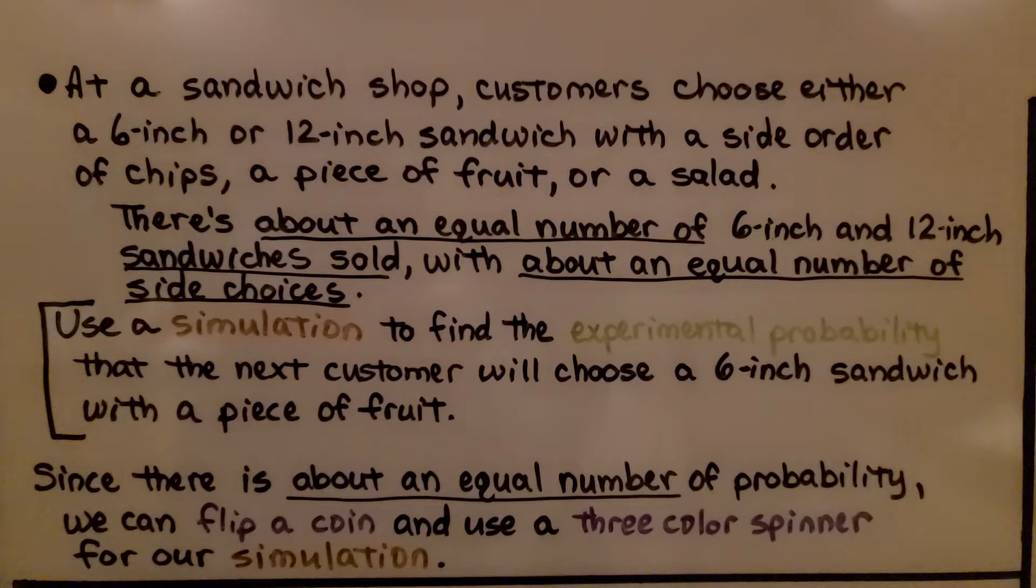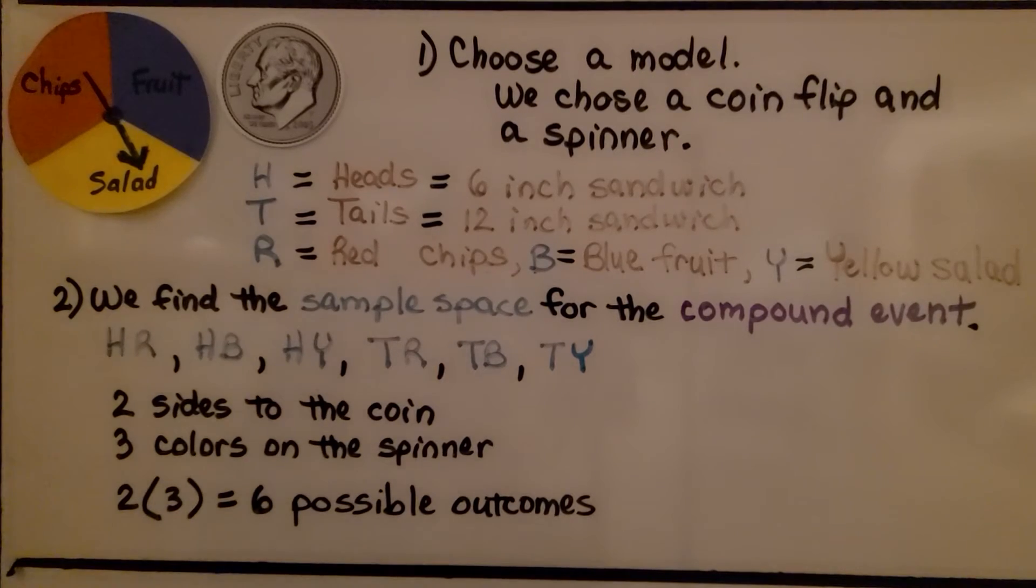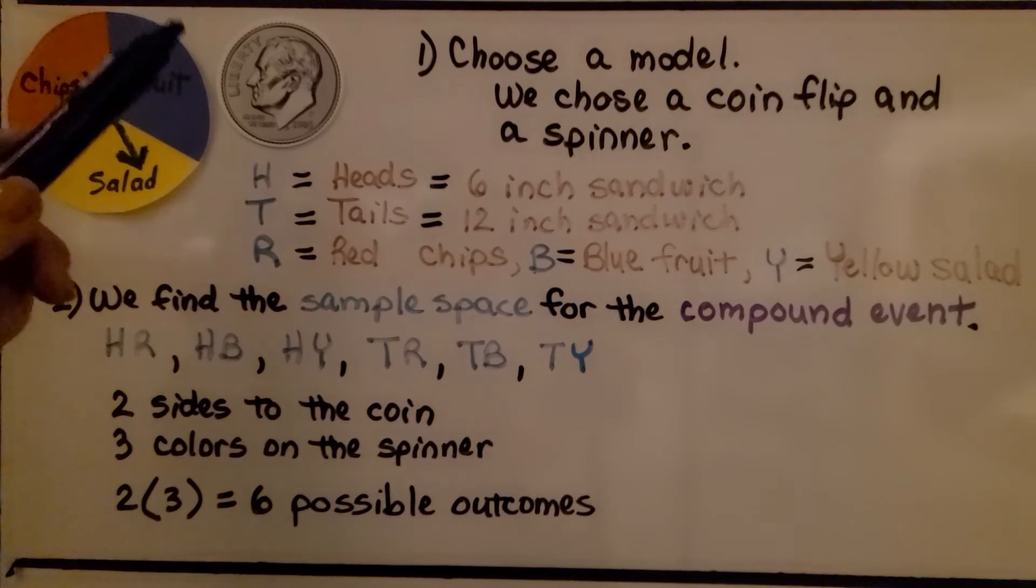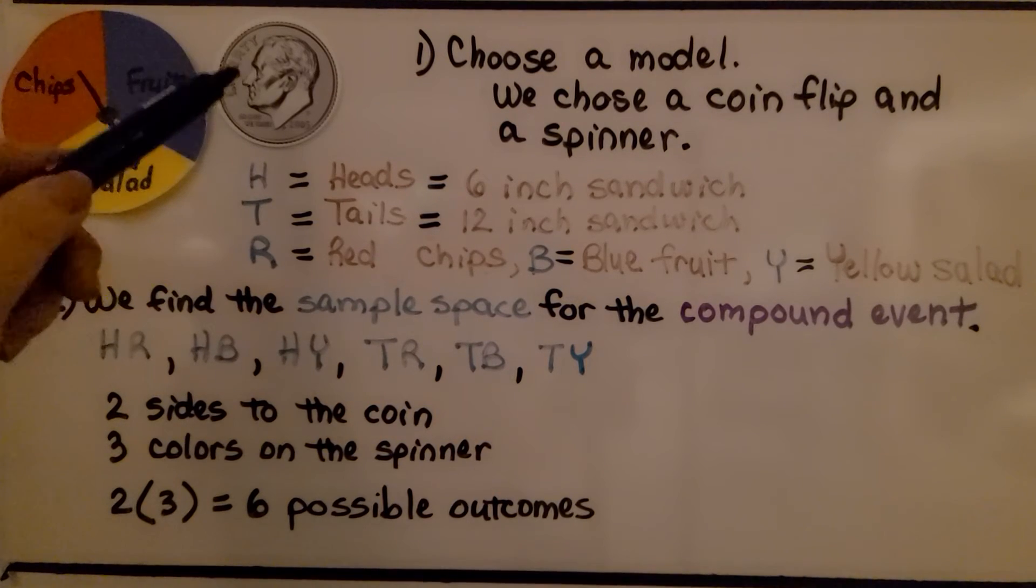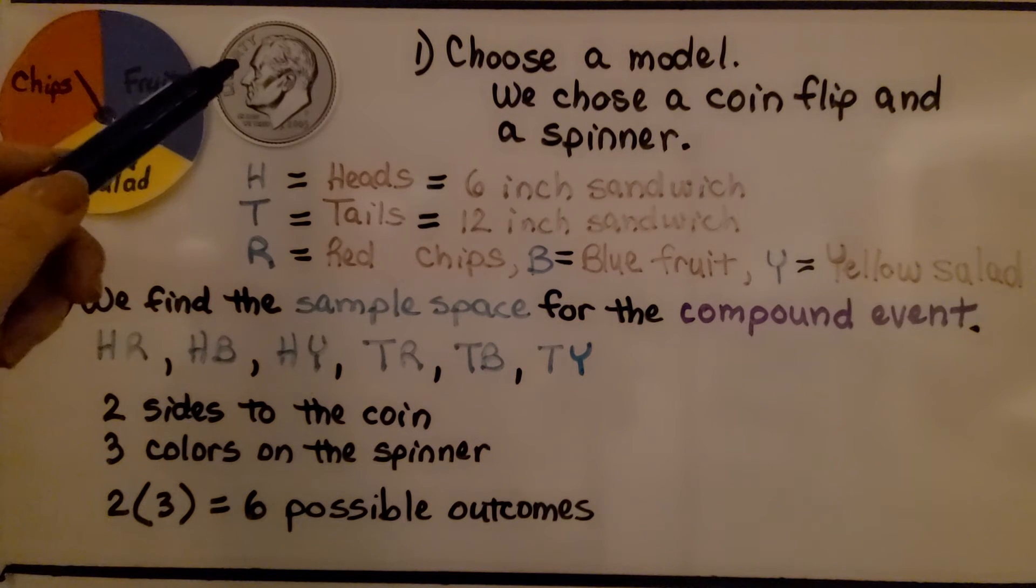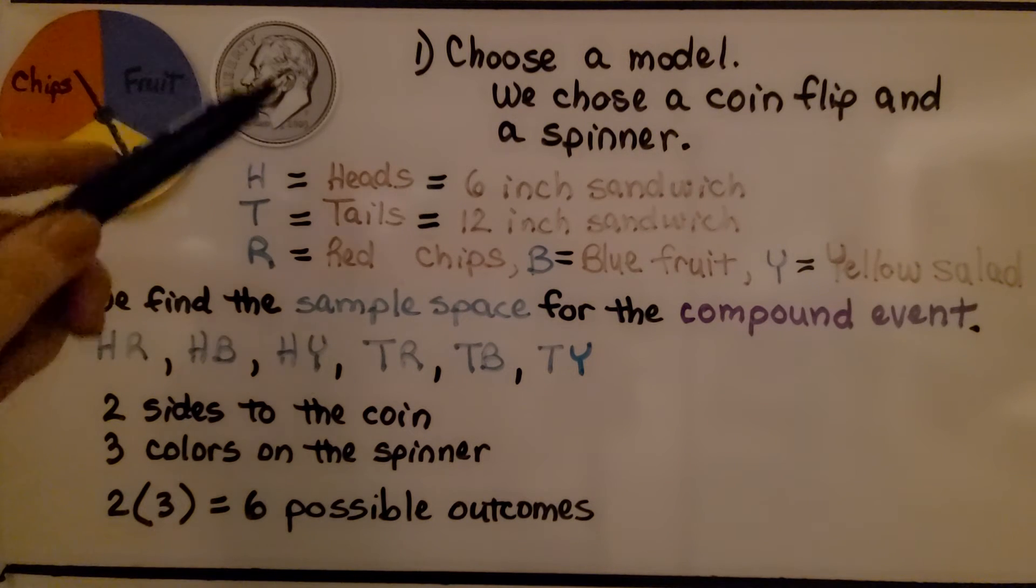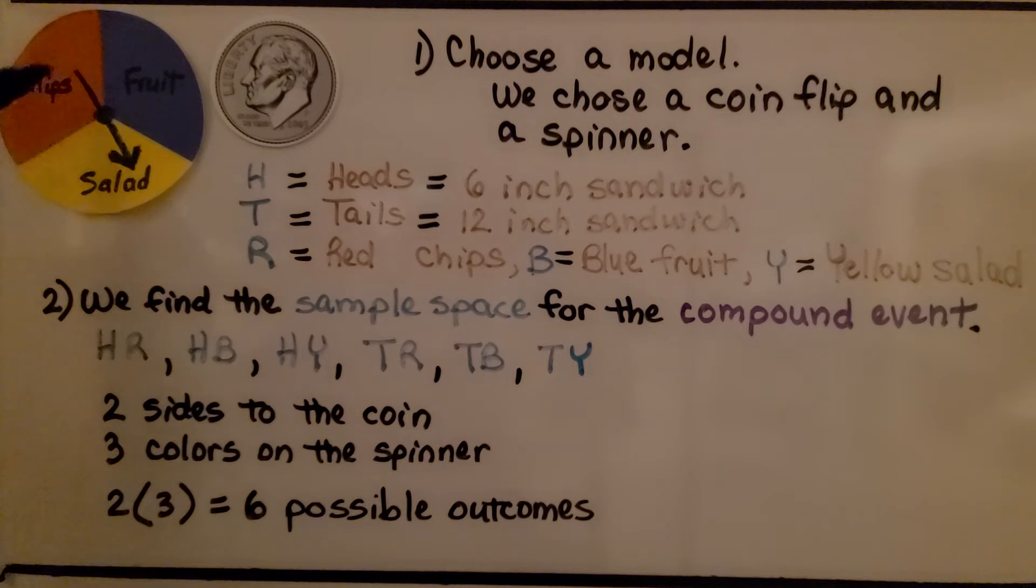Since there's about an equal probability, we can flip a coin and use a 3-color spinner for our simulation. These models will work because it's equally likely that we'll get heads or tails, and there's an equal probability for our sandwiches and sides. On our spinner, we have the same size sections for each of them, so that's very fair.